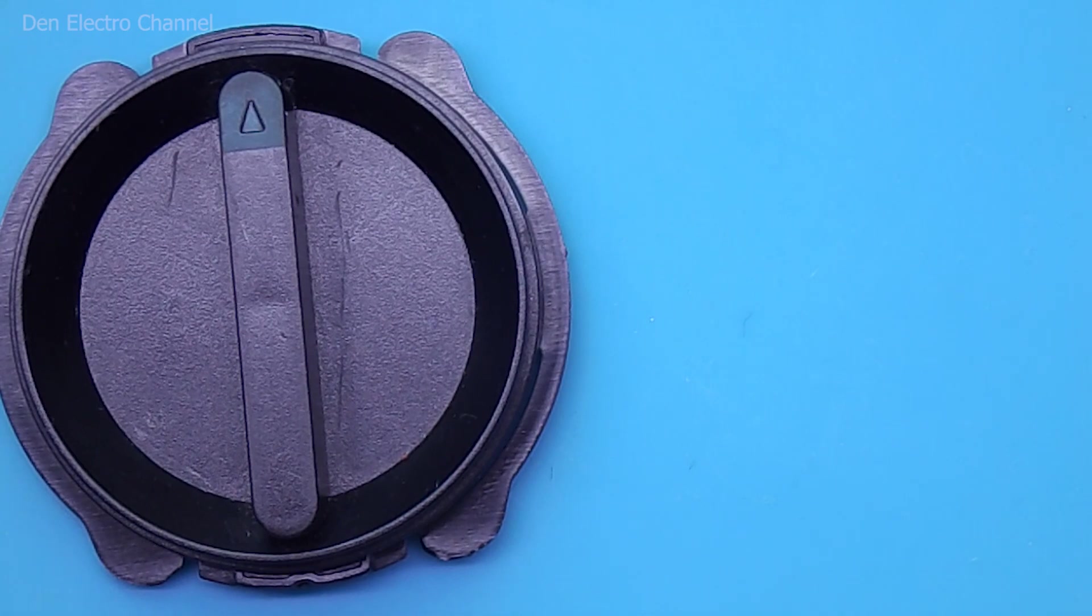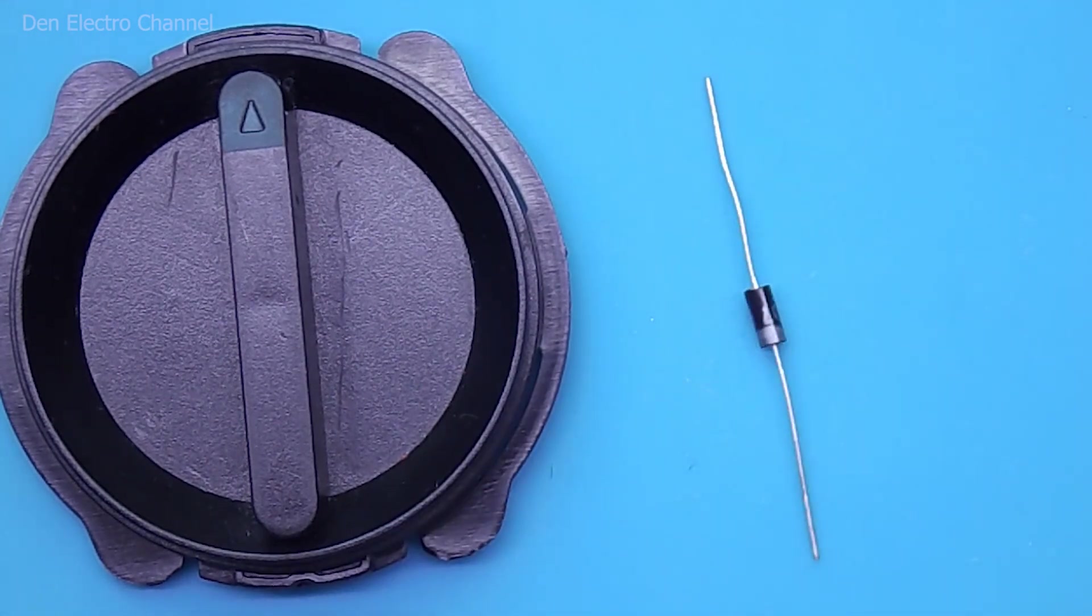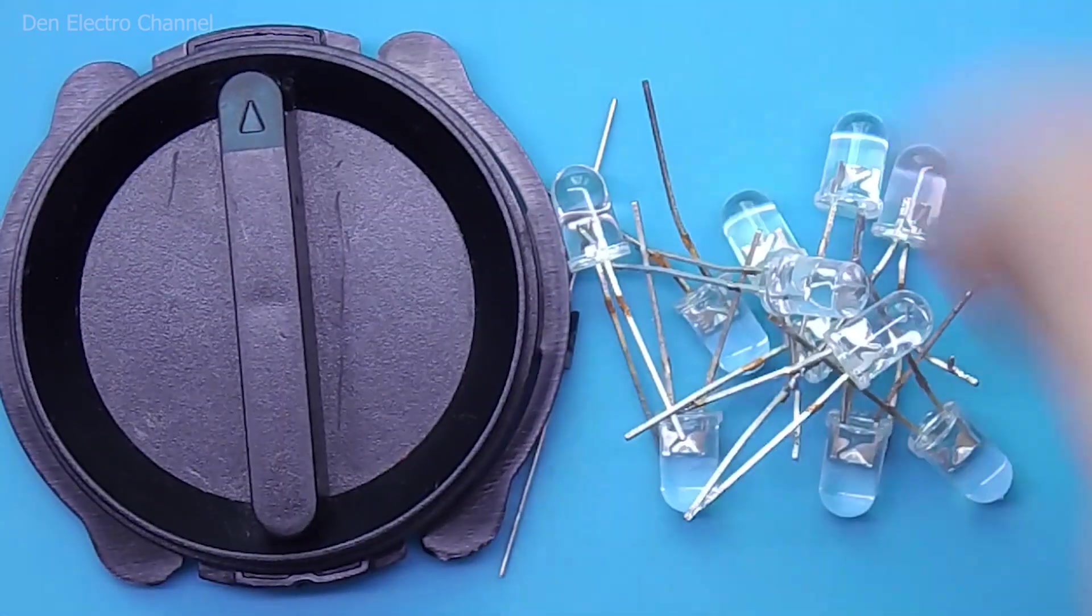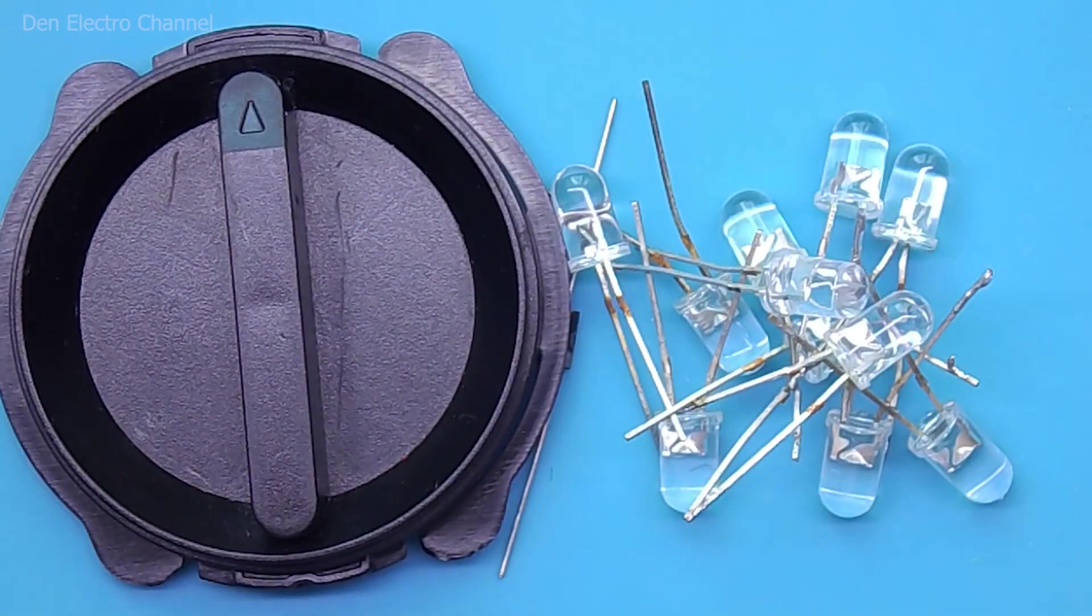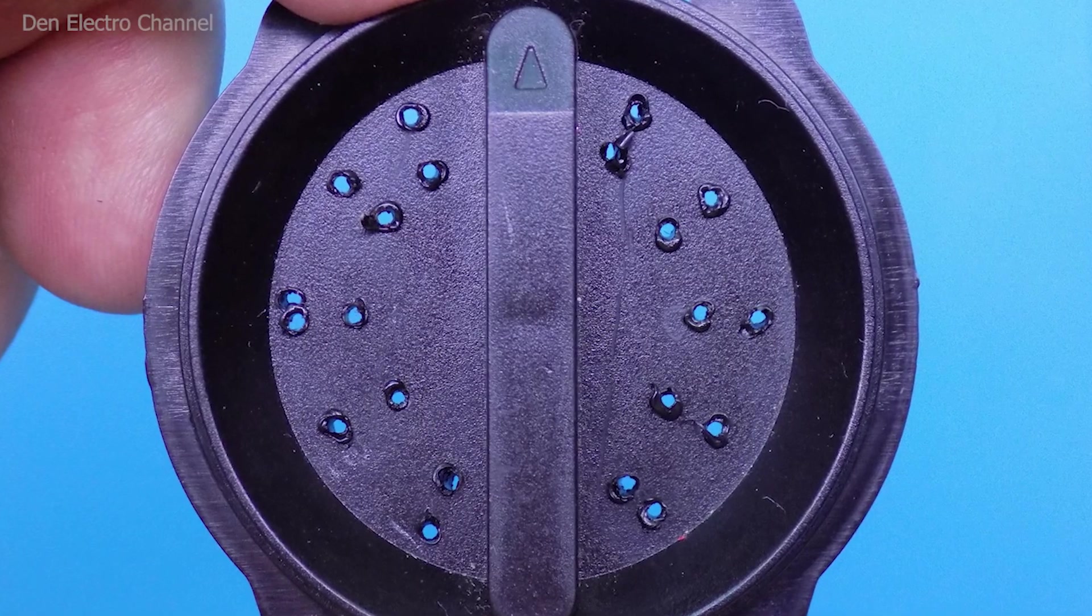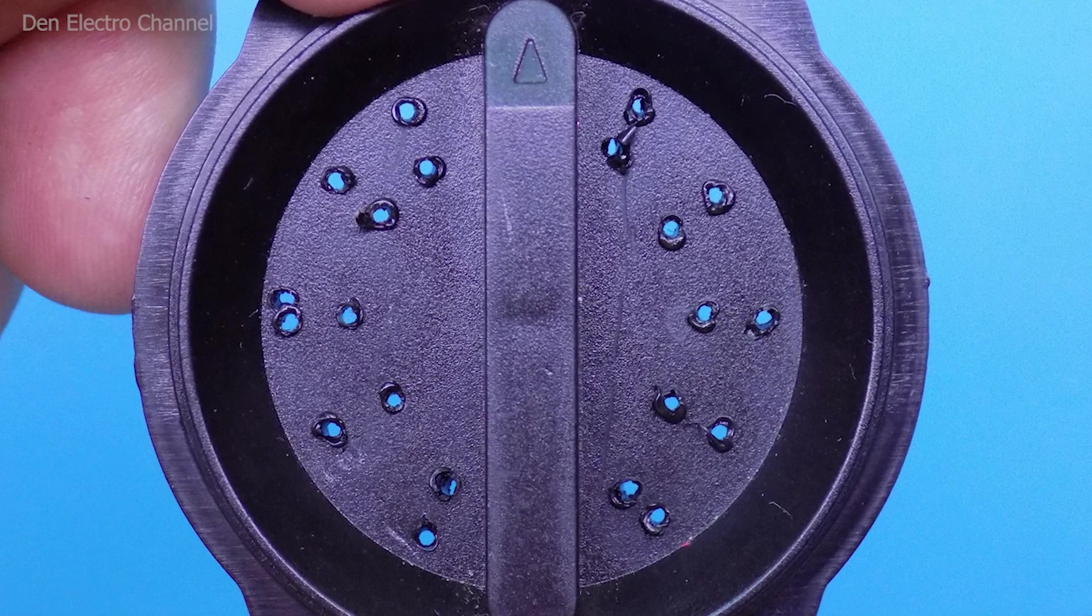To make a flashlight, you need to take a switching wheel, a 1N4007 diode, and 10-5mm white LEDs.